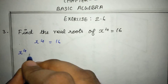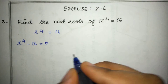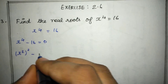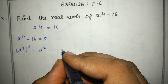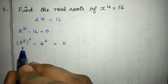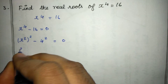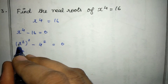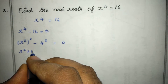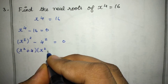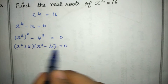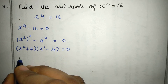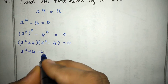We need to find the real roots. We can write x⁴ as (x²)², and rewrite the equation as (x²)² minus 4² equals 0. This is in the a² minus b² format, which factors as (x² + 4)(x² - 4) = 0.